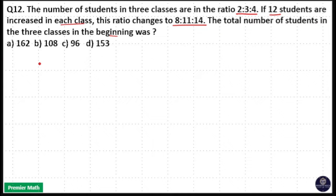So in the beginning, the number of students in the classes was 2:3:4, and after increasing 12 students in each class, the ratio changes to 8:11:14.